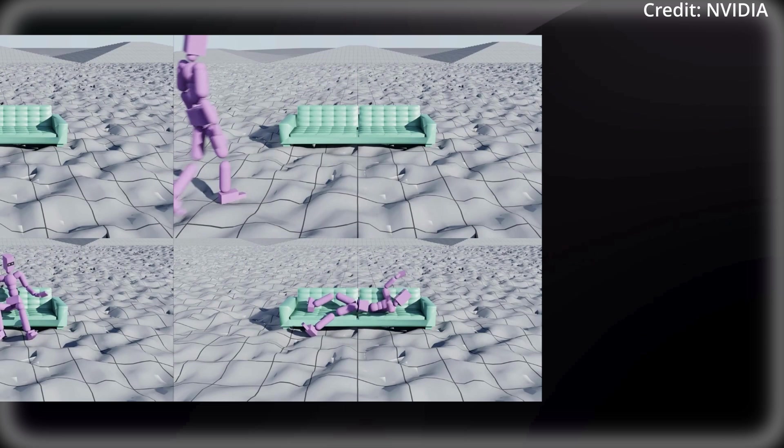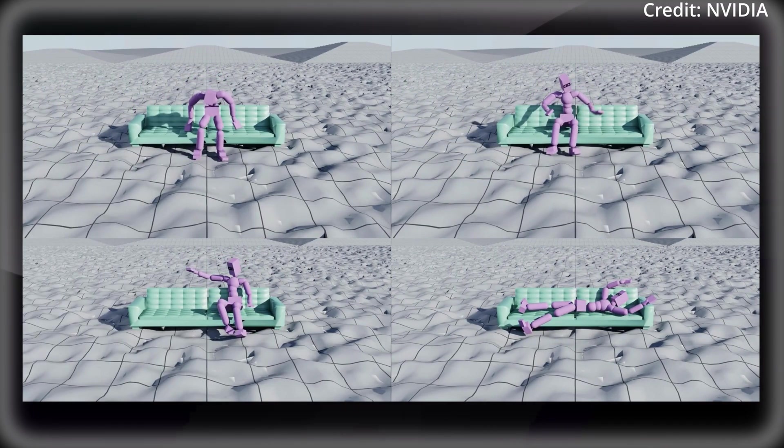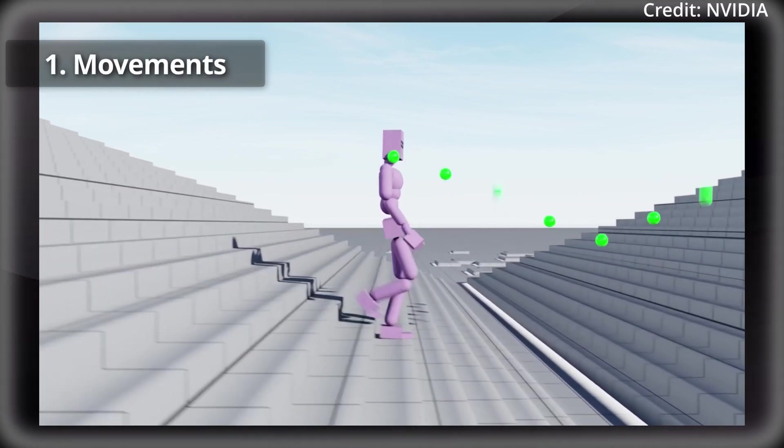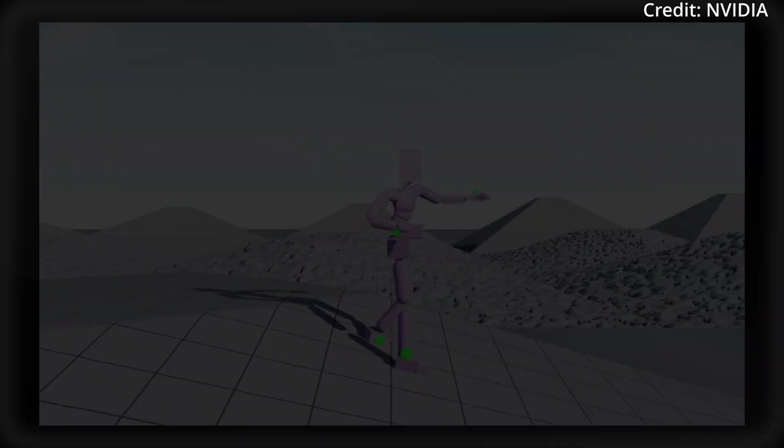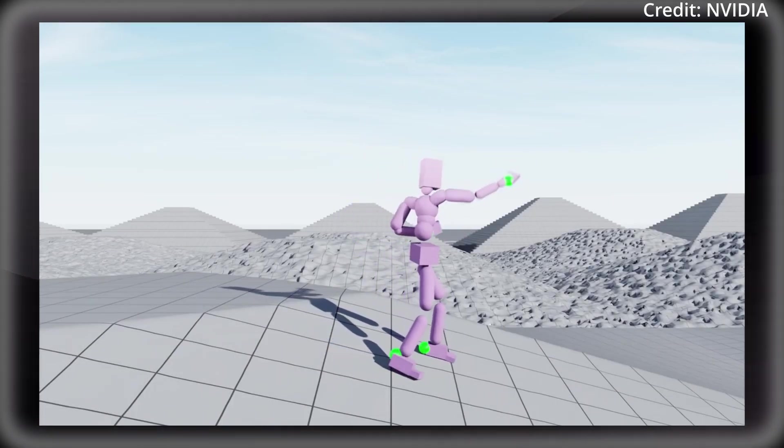Then, in the second stage, this controller is distilled into a more flexible, partially constrained version with the model being refined to process multimodal inputs, including its movements, incoming text commands, and object interactions. This results in Masked Mimic even being able to reconstruct entire motions from partial observations.